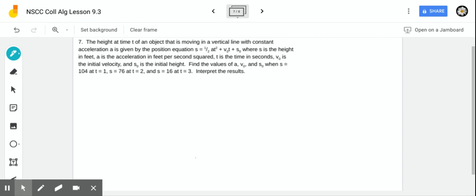In number seven, we are going to tackle a word problem. We have the height at time t of an object that's moving in a vertical line with constant acceleration is given by this position equation.